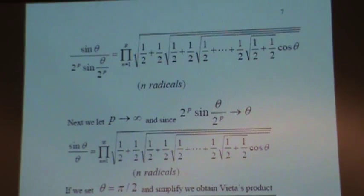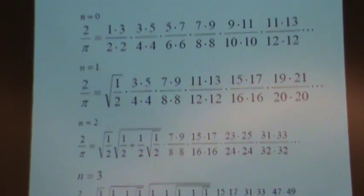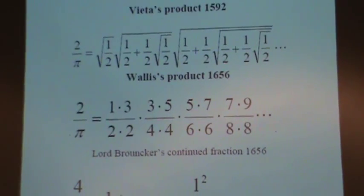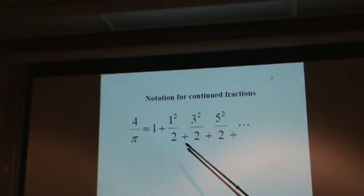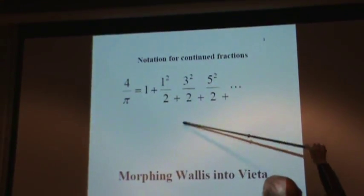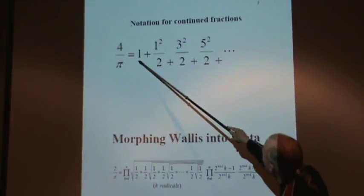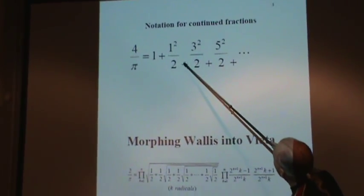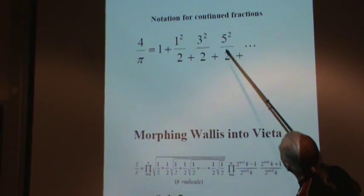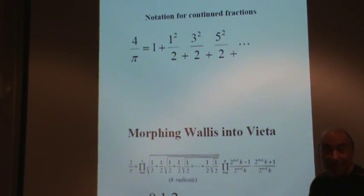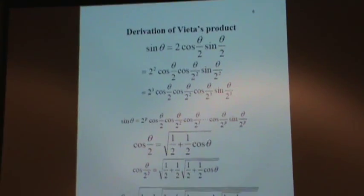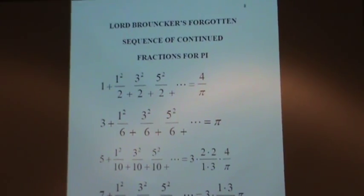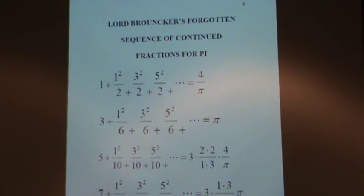I just want to mention that with the continued fractions here written this way, I'm going to write them in a more compact form this way. This is what people normally do. Instead of writing it so that it takes up two dimensions, we write it so that it's kind of linear. And we put the plus sign down here. So this is kind of down here, and this is below this one, by putting the pluses up here. So we're now going to take a look at this. Here we'll look at Brouncker's forgotten sequence of continued fractions for pi.